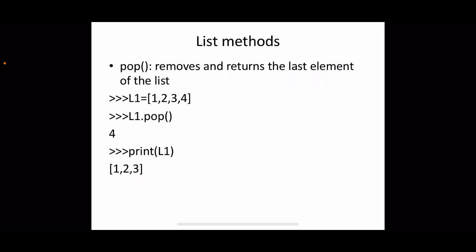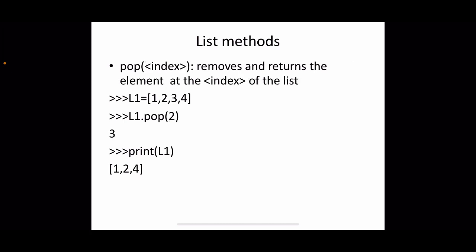The pop method removes and returns an element from the list. By default, l1.pop() removes and returns the last item — for example, it returns 4 and the new list no longer contains it. If you specify an index, l1.pop(index) removes and returns the element at that particular position.